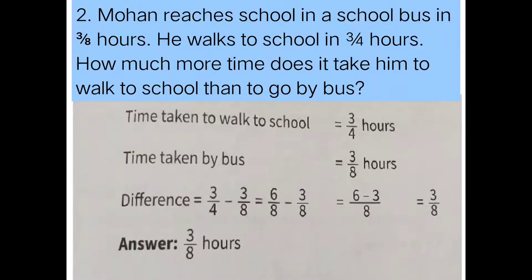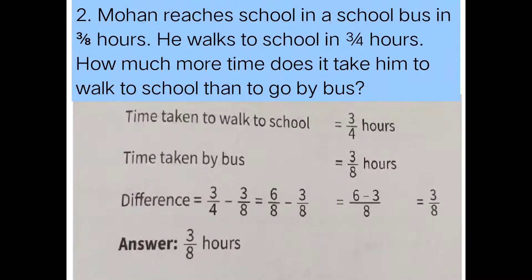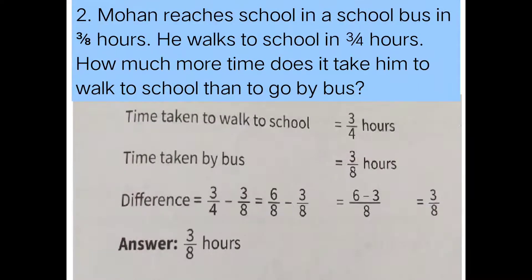Here we have the next sum. Mohan reaches school in a school bus in 3/8 hours. He walks to school in 3/4 hours. How much more time does it take him to walk to school than to go by bus? We are going to find the difference using subtraction. The time taken to walk is 3/4 hours and the time taken by bus is 3/8 hours.